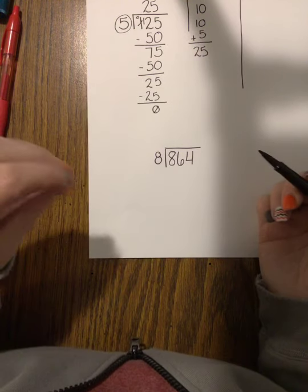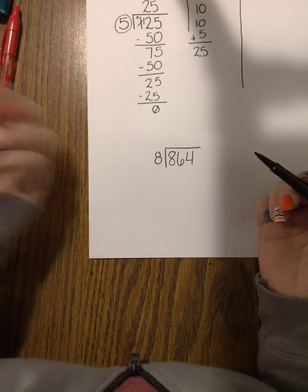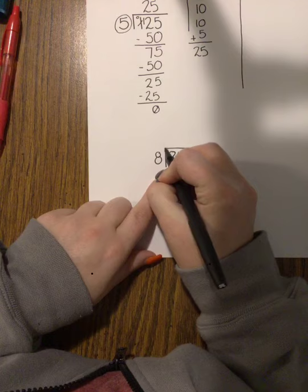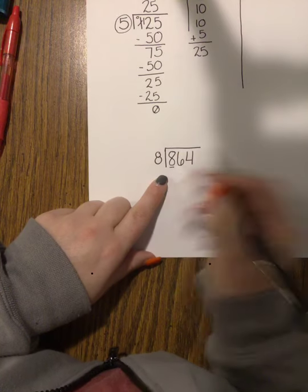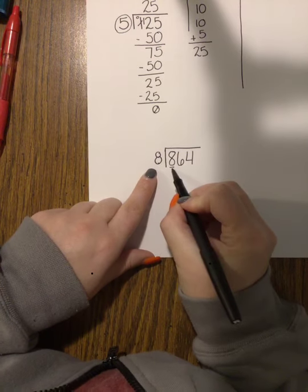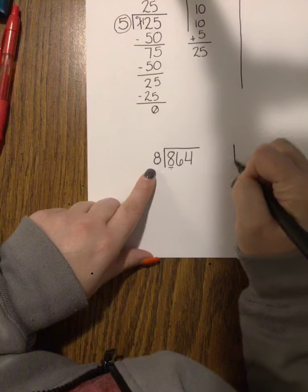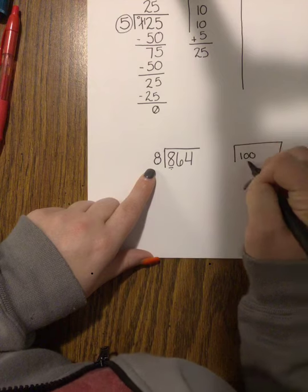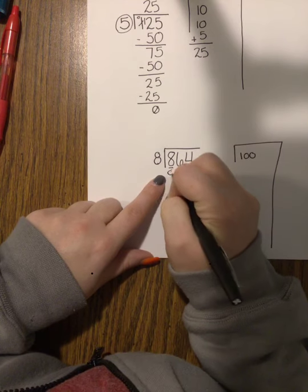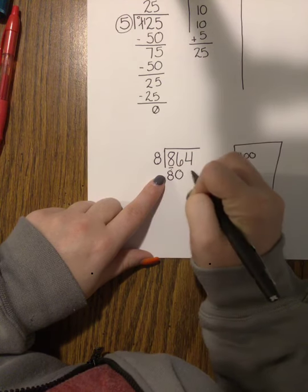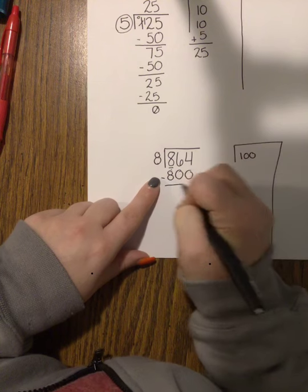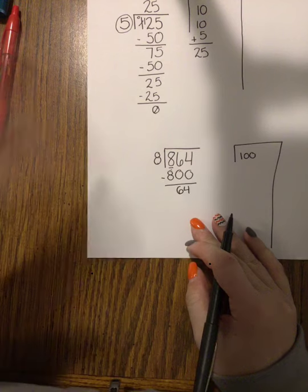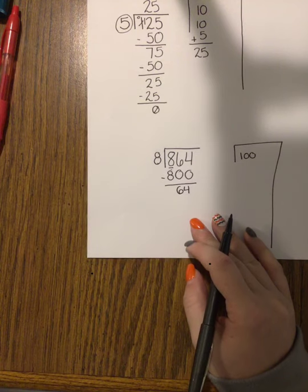When we're thinking about how large of groups to take out, we want to try and take out groups of 5, 10, or 100 because those are easy numbers to multiply. If I look at my first digit, I have an 8, and I know that 8 goes into 8, which means I can actually take out 100 groups of 8. So 100 times 8 is 800. Subtract that, now I have 64.